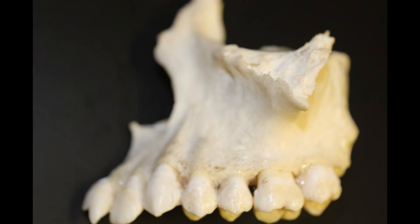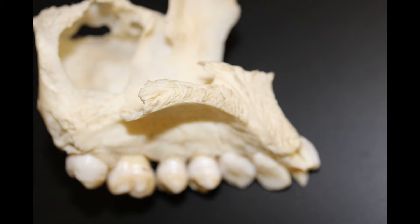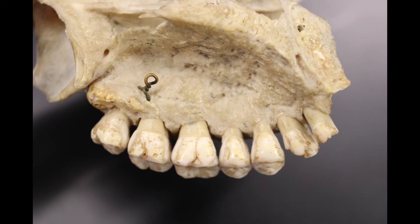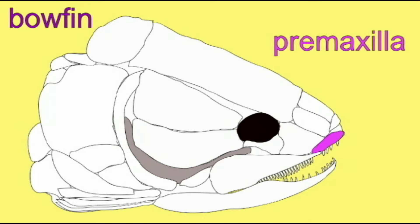The alveolar margin of the maxillary bones holds the sockets for teeth. All of the teeth in the upper jaw are located in the maxillary bones.